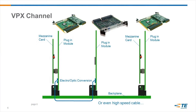We also looked at what's happening in the channel. In a standard digital channel, electrons are going off the card, through the connectivity, into the backplane, and into another card. You can also do this with fiber optics — the conversion from electrons to photons — and we have some new things we're doing in high-speed cable options. There are a lot of ways you can do this, but our talk today is really going to be focused on fiber optic.